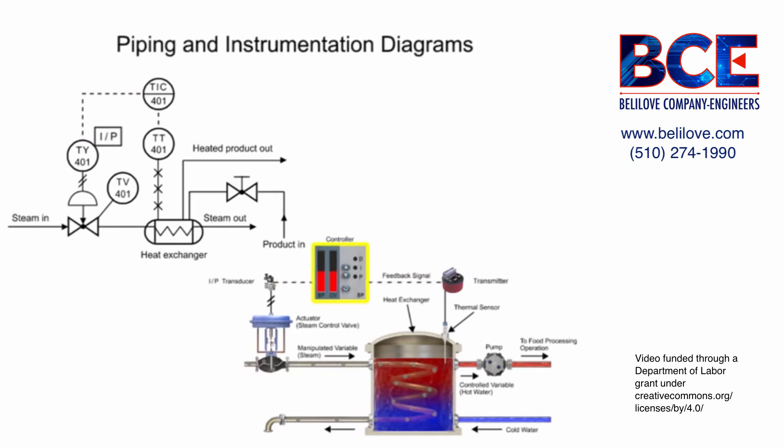The controller and indicator is the instrument where the transmitter sends an electrical signal, and is shown in the functional identifier at the second and third letters I and C.